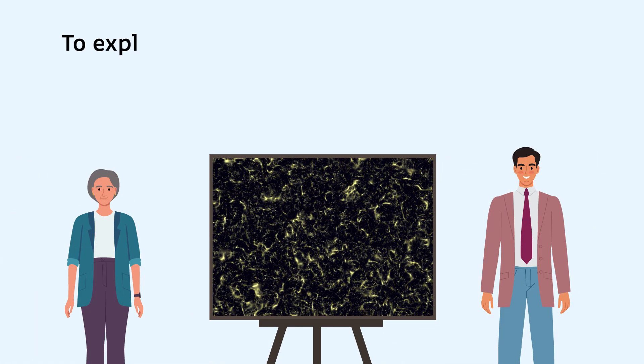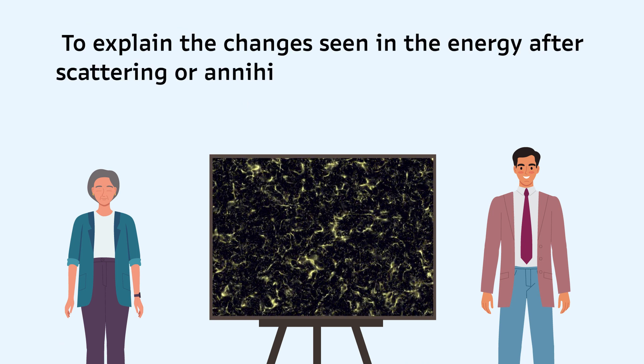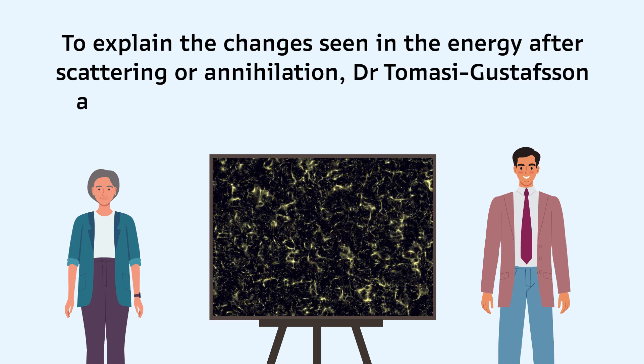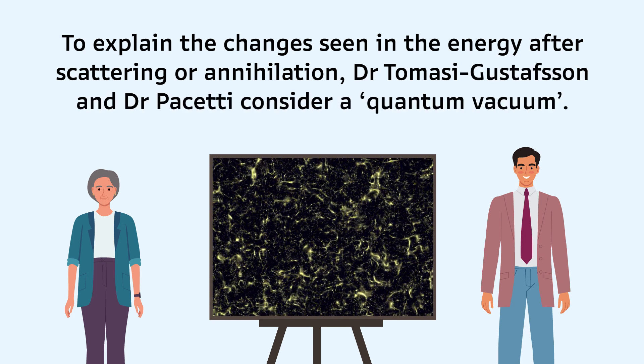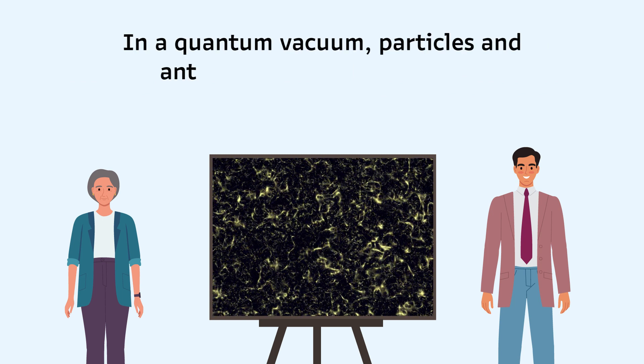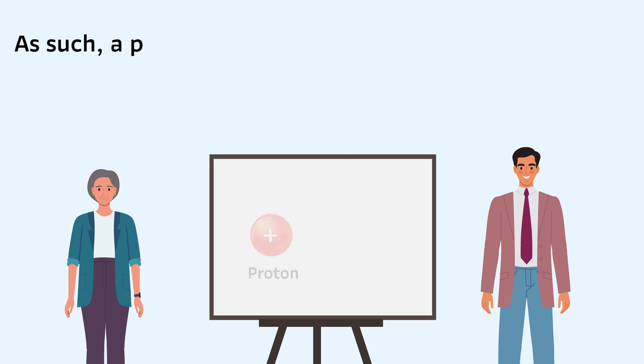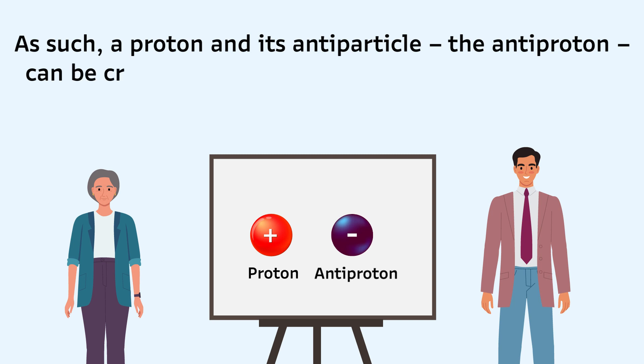To explain the changes seen in the energy after scattering or annihilation, Dr. Tomasi Gustafsson and Dr. Pacchetti consider a quantum vacuum. In a quantum vacuum, particles and antiparticles can be created. As such, a proton and its antiparticle, the antiproton, can be created.